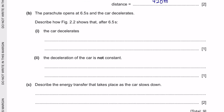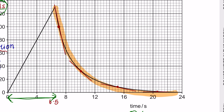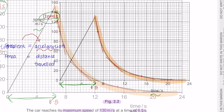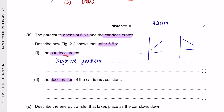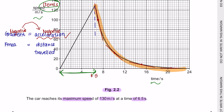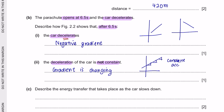Question B: the parachute opens at 6.5 seconds and the car decelerates. Describe how figure 2.2 shows that after 6.5 seconds the car decelerates. After 6.5 seconds the graph is a curve, and the tangent at any point on this curve has a negative gradient. A negative gradient means negative acceleration, which is deceleration. The deceleration is not constant because the gradient keeps changing — a straight line would indicate constant acceleration, whereas a curve means the gradient, and therefore the acceleration, is constantly changing.